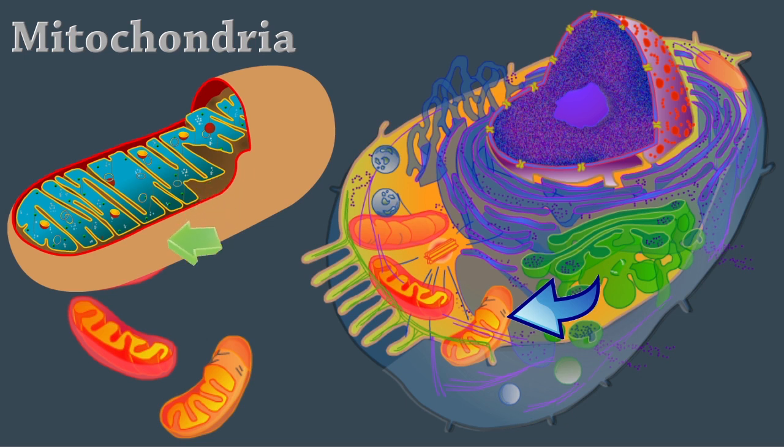The number of mitochondria in a cell varies depending on the cell type. Red blood cells have no mitochondria, and liver cells can have more than 2,000.